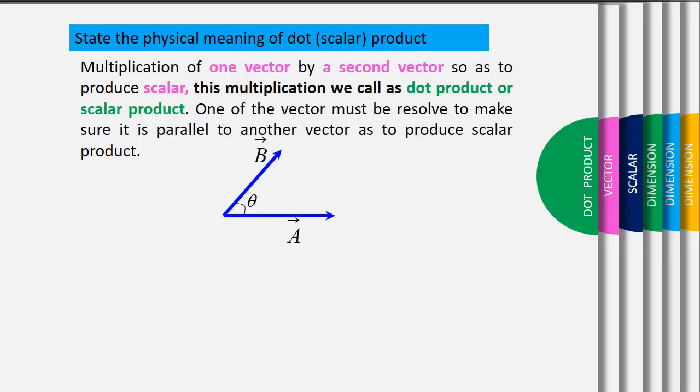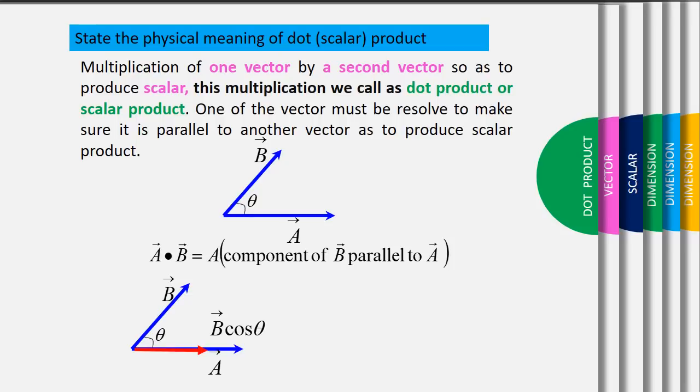One of the vectors must be resolved to make sure it is parallel to another vector as to produce scalar product. Refer to the diagram, we have vector a and vector b separated by some certain angle theta. To make it scalar, we have to resolve b to be parallel with vector a.